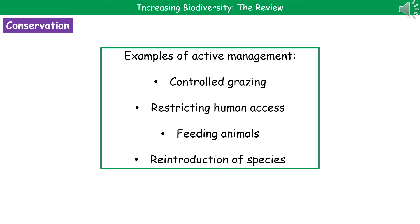When we're talking about active management, there are a few examples you should know. One is controlled grazing — only allowing animals to graze land for a certain period of time, which means any plant species on that land has time to recover. We can also restrict human access so that, by keeping people to paths, it prevents trampling of endangered plants.